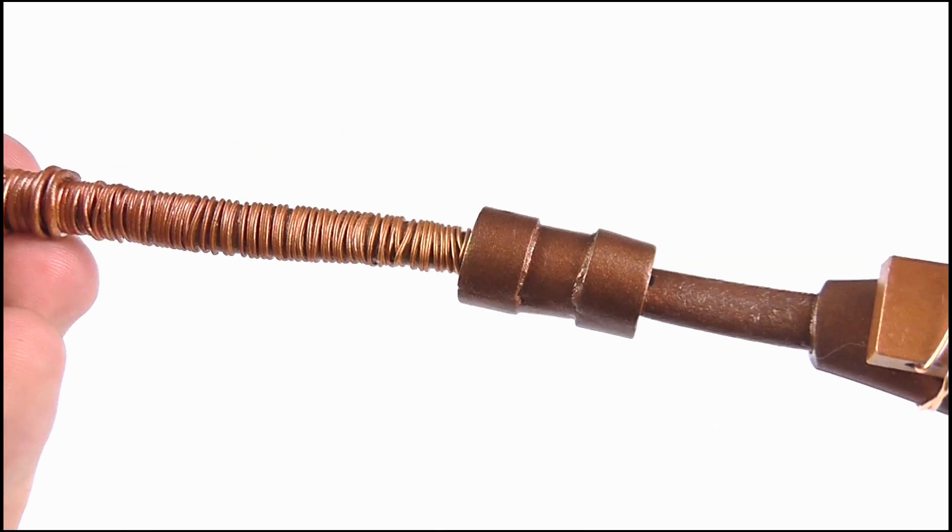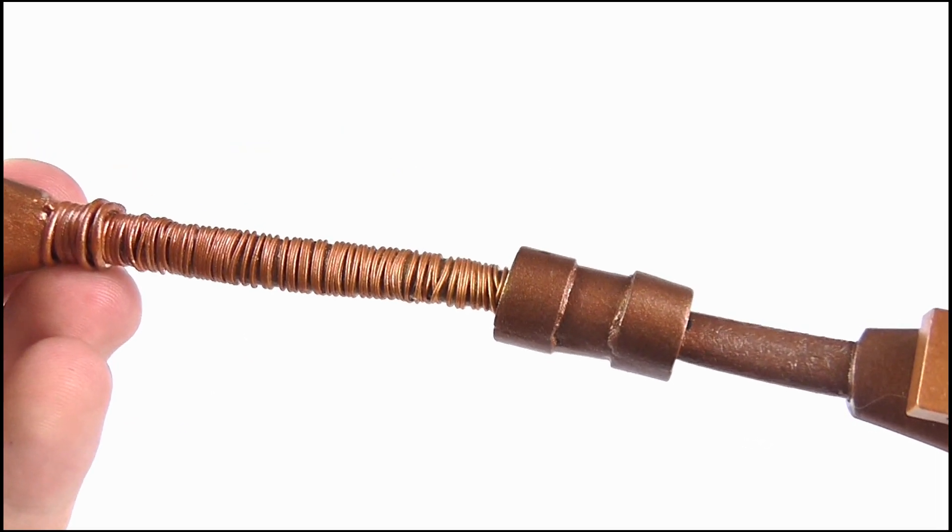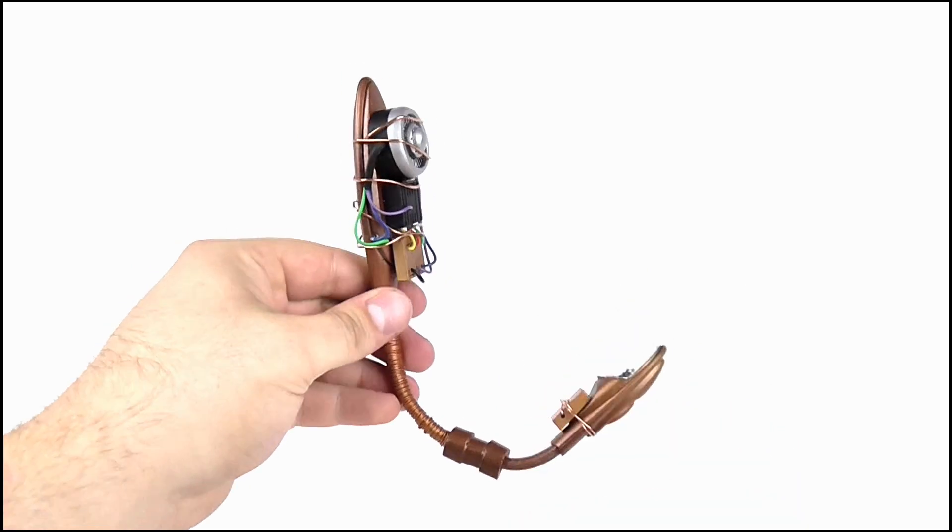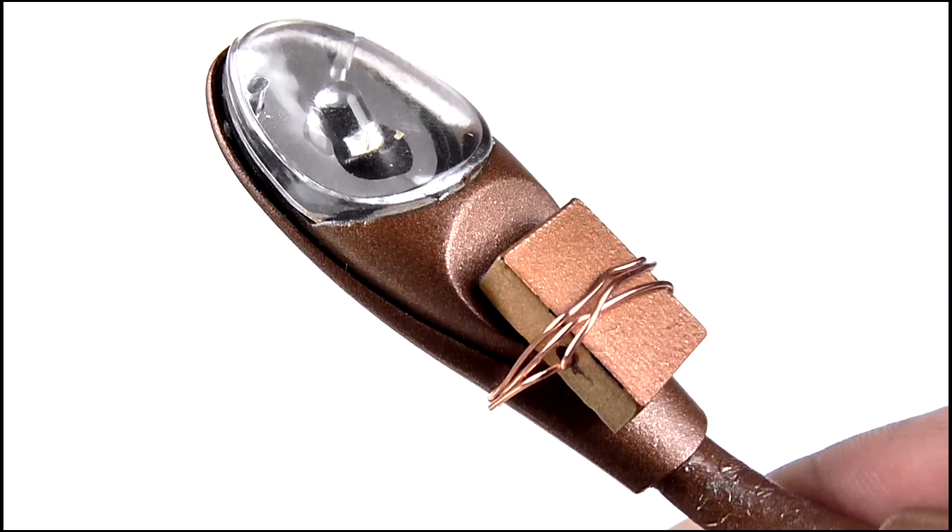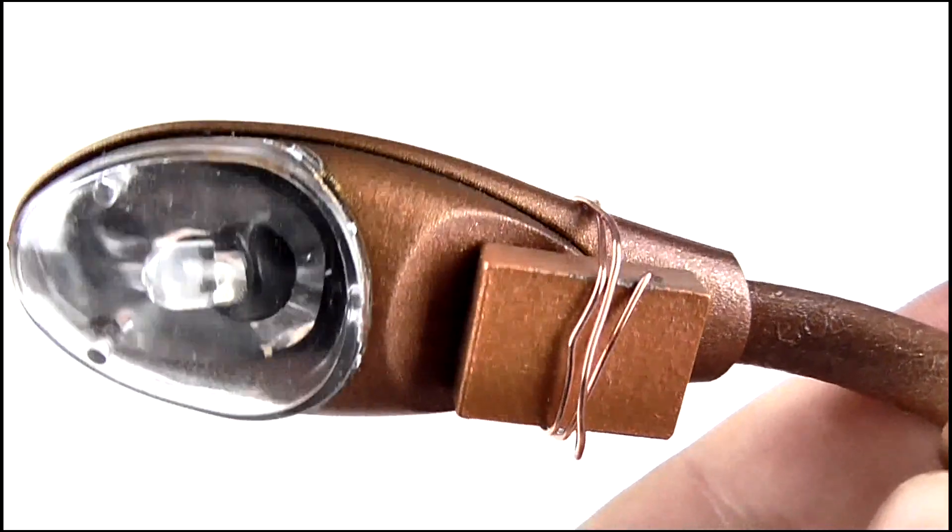More copper wire has been added to this bendable section below it, meaning the device can be curved so the mouthpiece can be brought up to, well, the mouth. Nothing's been majorly changed here except for this cuboid section added to the bottom with, what else, copper wire.